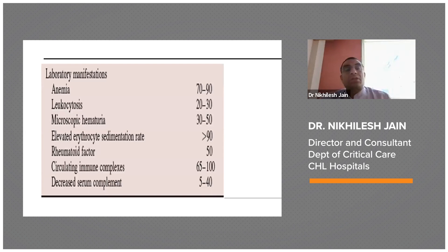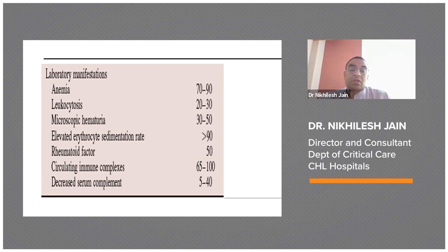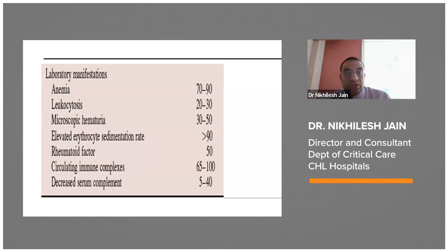These are certain lab manifestations you can see on further testing. You can get anemia in these patients up to 70% to 90%, leukocytosis 20% to 30%, microscopic hematuria on urine routine, elevated ESR in more than 90%, a positive rheumatoid factor in 50%, circulating immune complexes in 65% to 100%, and decreased serum complement level in 5% to 40% of these patients.